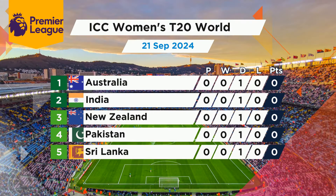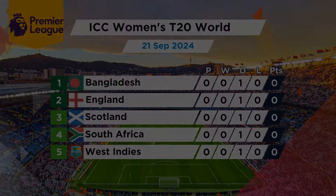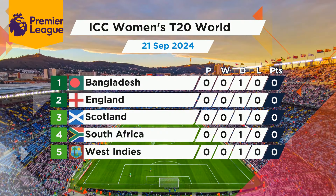In Group A are Australia, India, New Zealand, Pakistan and Sri Lanka. In Group B are Bangladesh, England, Scotland, South Africa and West Indies.